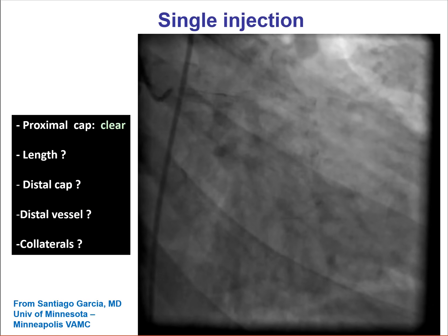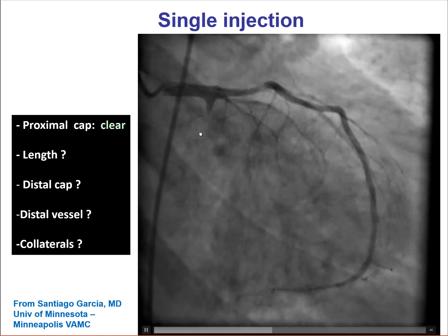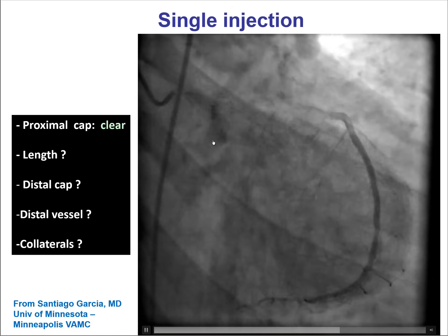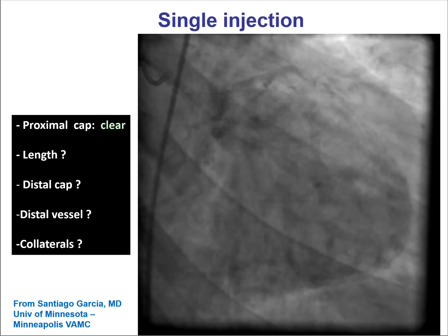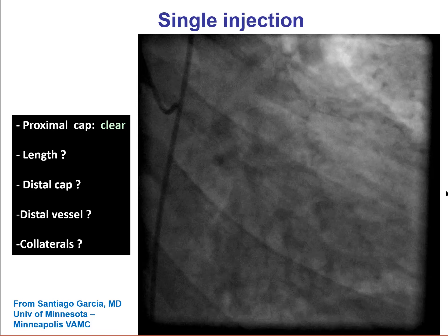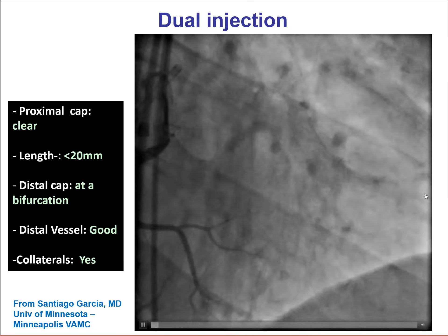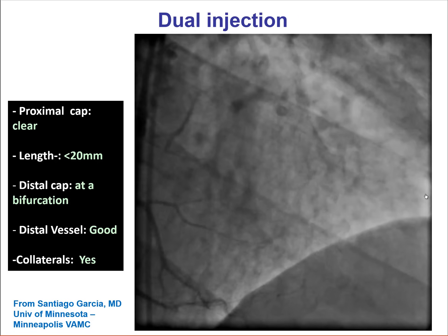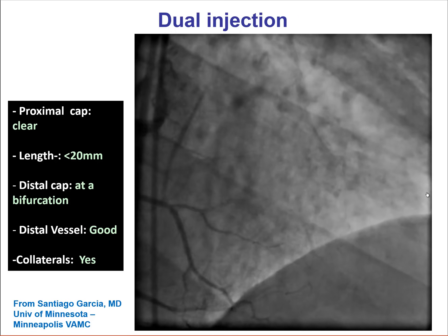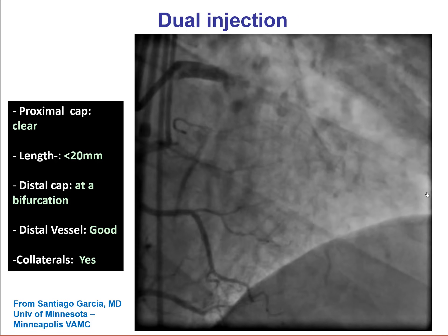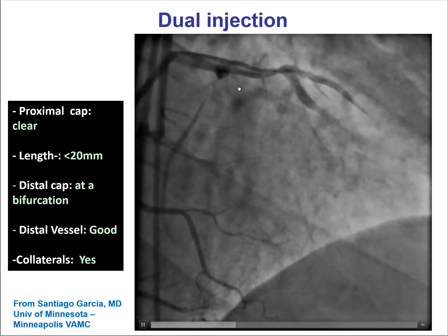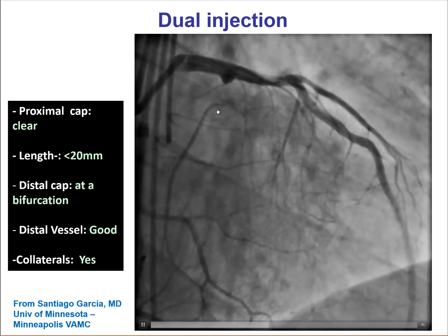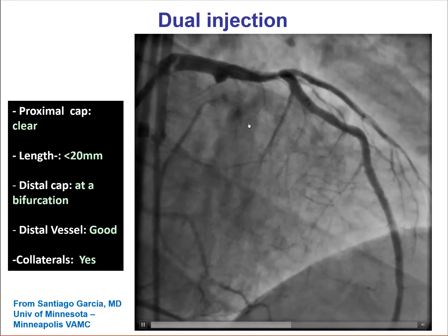This is another example of a proximal circumflex CTO, which is again difficult to appreciate before dual injection is performed. However, using dual injection through the right coronary artery, one can see that the occlusion is actually fairly short and the distal cap is at a bifurcation.